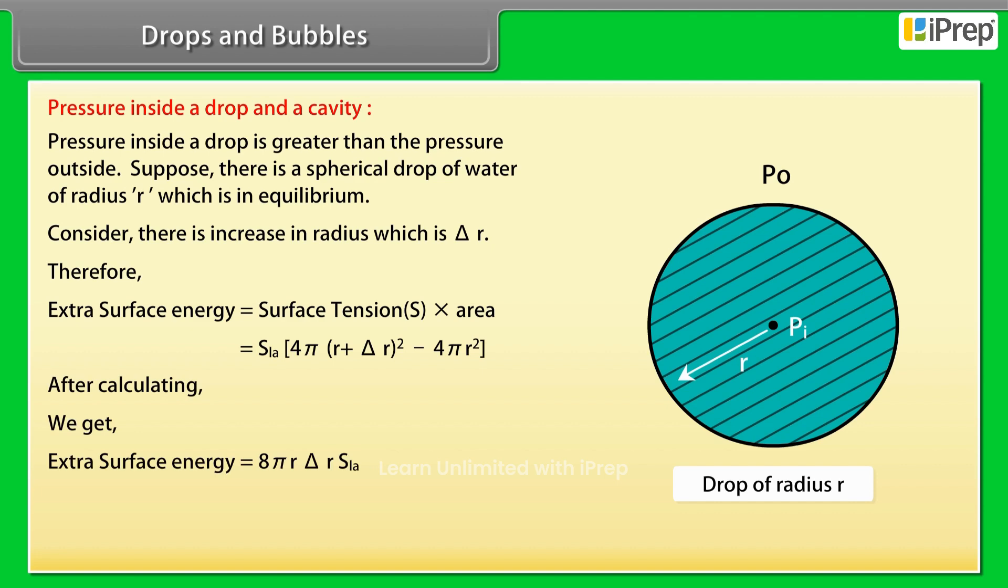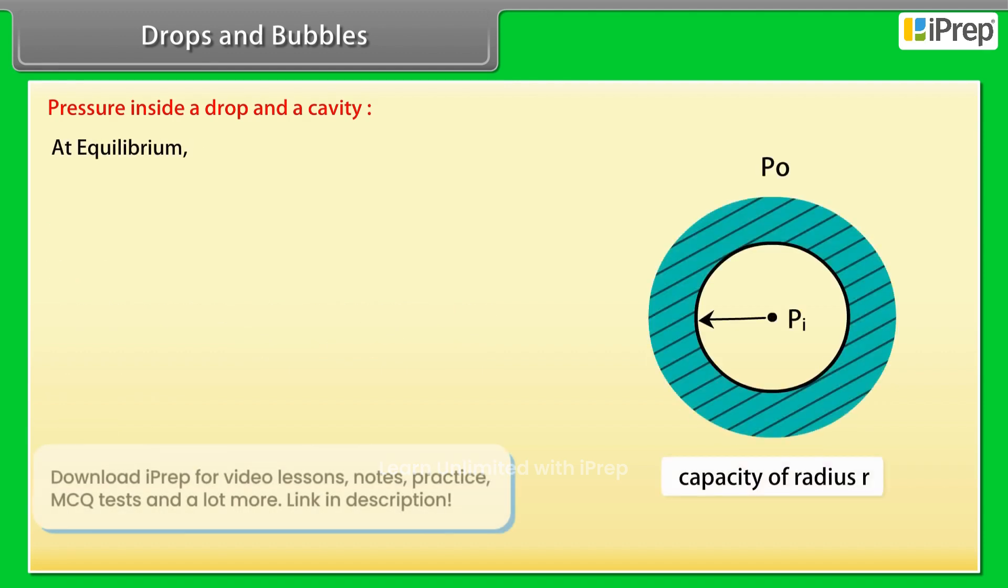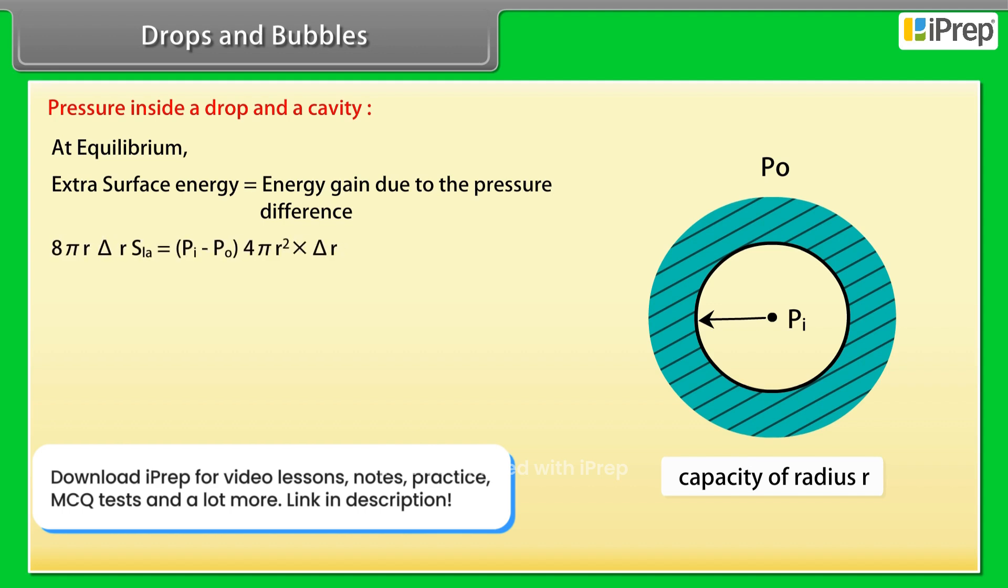At equilibrium, extra surface energy is equal to energy gain due to the pressure difference. 8πr·Δr·S is equal to (Pi - Po) into 4πr²·Δr, where Pi is pressure inside the drop.